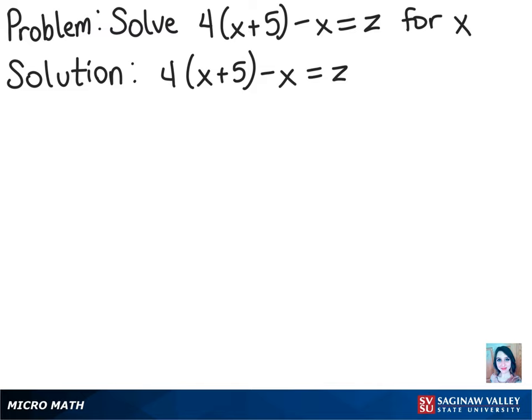To solve this equation for x, the first thing we can do is distribute the 4 to the x and the 5. Doing so, we'll get 4x plus 20 minus x equals z.